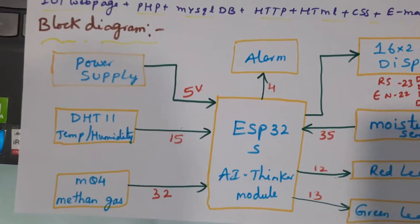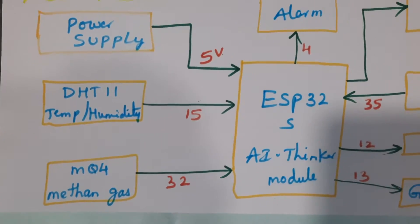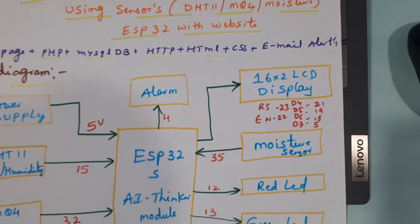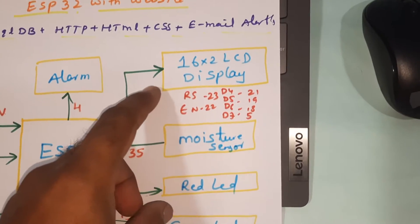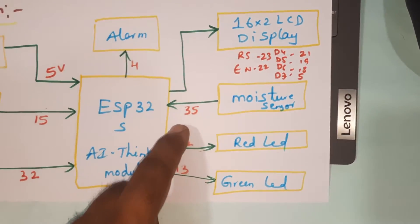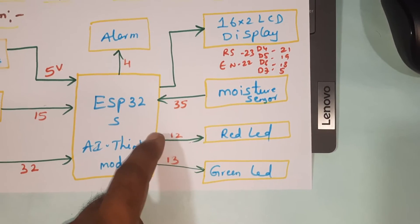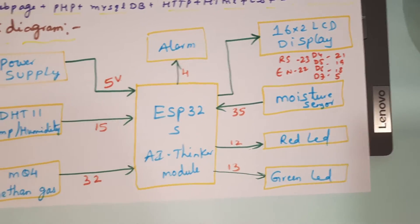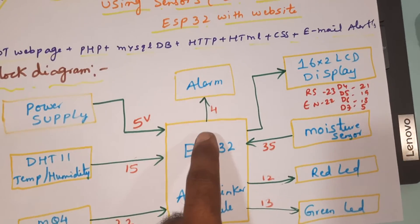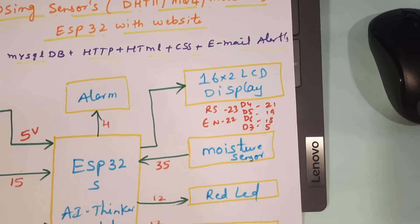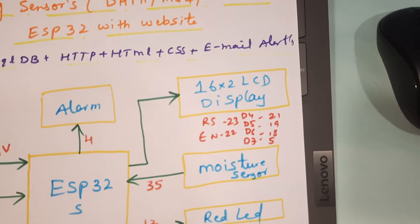We are using a power supply module, ESP32 AI Thinker module, DHT11 temperature and humidity sensor, MQ4 methane gas sensor, alarm, and 16x2 LCD display. The moisture sensor is connected to ADC pin 35, methane gas sensor to ADC pin 32, red and green LEDs to GPIO pins 12 and 13, DHT11 to GPIO pin 15, alarm to GPIO pin 4, and LCD RS, EN, D4–D7 to GPIO pins 23, 22, 21, 19, 18, and 5.